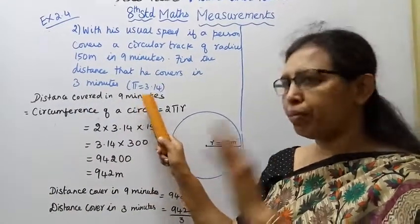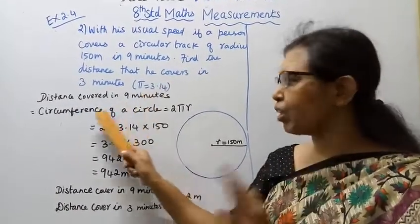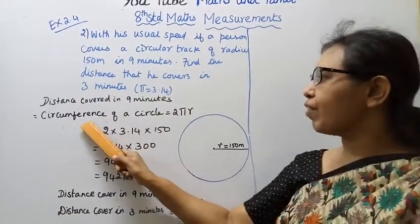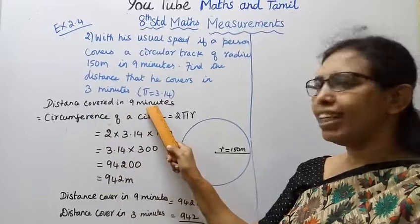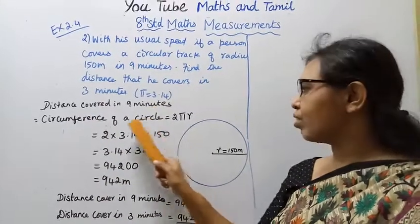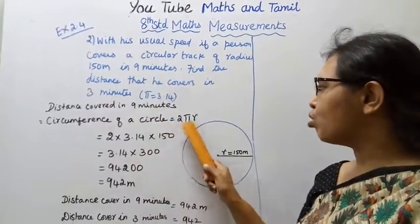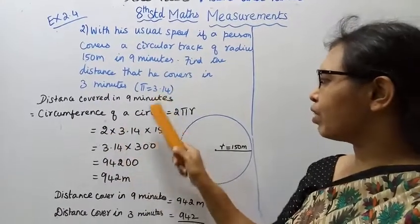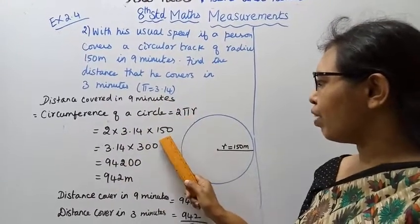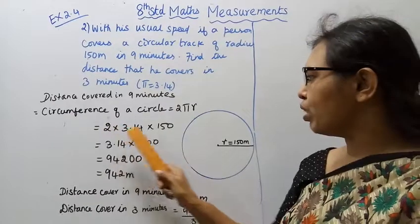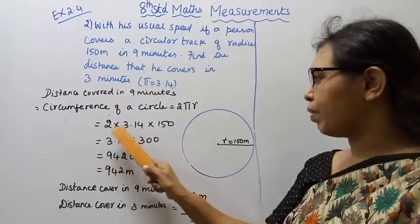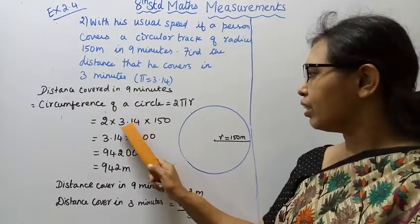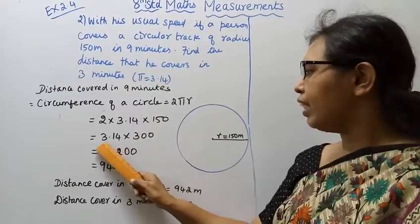What is the circumference of a circle? The circumference of a circle is 2πr. The value of π is 3.14 and the radius is 150 meters. So: 2 × 3.14 × 150 = 3.14 × 300 = 942 meters. Distance covered in 9 minutes is 942 meters.